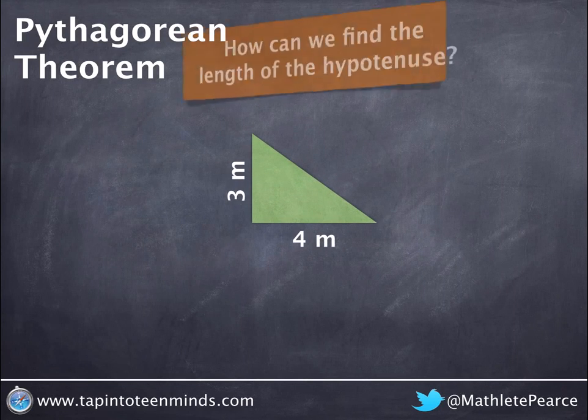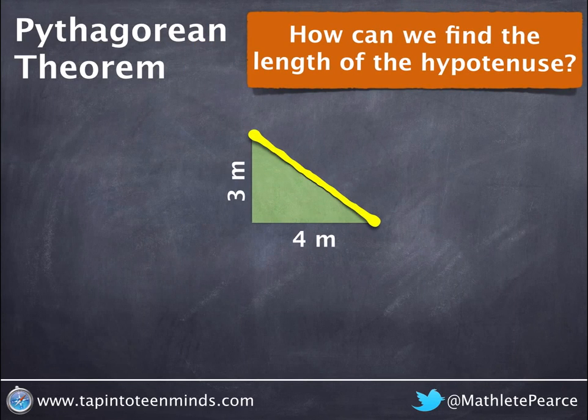In this video we're going to attempt to find the length of the hypotenuse of a right-angled triangle. In this example we're looking at a triangle with side lengths of 3 meters and 4 meters respectively.